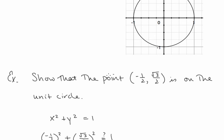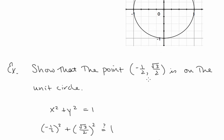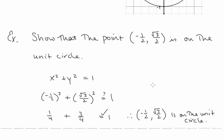For example, let's show that the point is on the unit circle, where x equals negative 1/2 and y equals radical 3 over 2. We square the x and square the y, add the two, and see if it equals 1. Negative 1/2 squared is positive 1/4. Radical 3 over 2 squared is 3/4. And 1/4 plus 3/4 does equal 1, so we've shown that this point is on the unit circle.